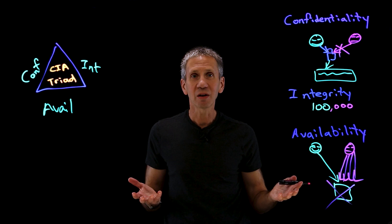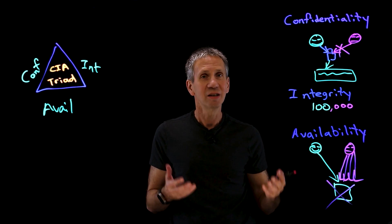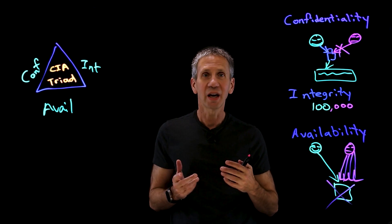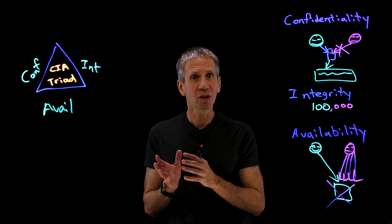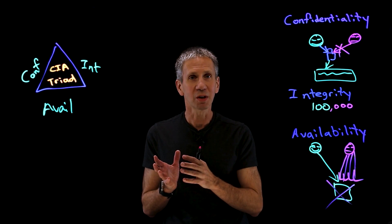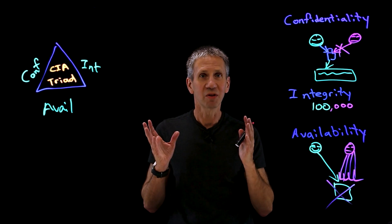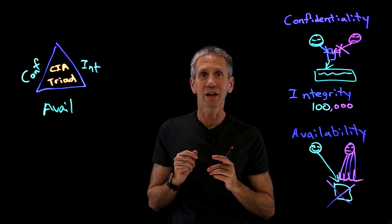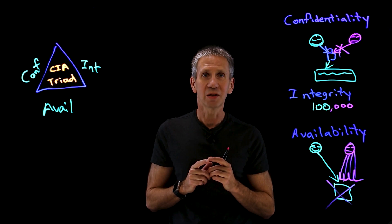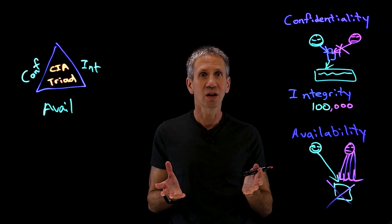When it comes to security, think CIA — not the spy guys, but the CIA triad — and use it as a checklist. Whenever you come up with a new security project, go back over the different angles of the CIA triad and ask: Did I cover confidentiality? Did I cover integrity attacks? Did I cover availability? If you've got all of those things covered, then it's job finished.